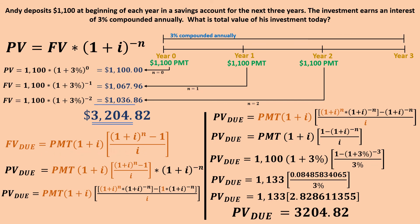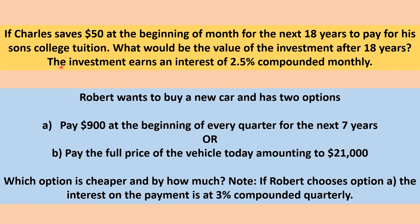So to summarize: the FV formula gives you the future value for simple annuity due, and the PV formula gives you the present value. I have some additional practice questions here — go ahead and solve them and comment your answers below. If you liked this video, please give it a thumbs up, consider subscribing to the channel, and check out the other videos. Thank you, bye!